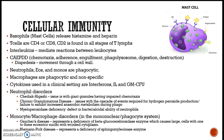The cytokines used in a clinical setting are interferons, interleukins, and GM-CSFs. Neutrophil disorders include Chediak-Higashi, which is impaired chemotaxis; chronic granulomatous disease, which involves issues with hydrogen peroxide production where the cell cannot destroy the microorganism once it's inside; and myeloperoxidase deficiency, a defect in the bactericidal ability of neutrophils leading to many bacterial infections. Monocyte-macrophage disorders include Gaucher's disease involving the beta-glucocerebrosidase enzyme, and Niemann-Pick disease, which is a deficiency of sphingomyelinase.